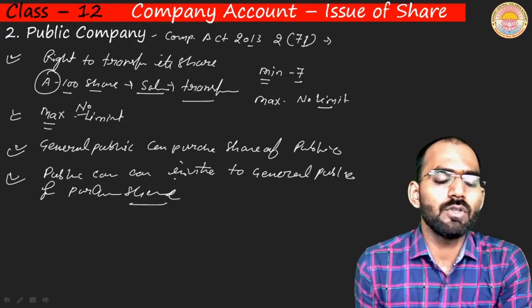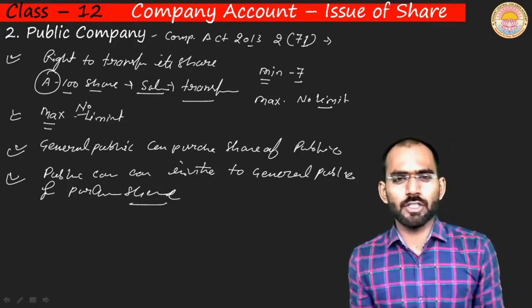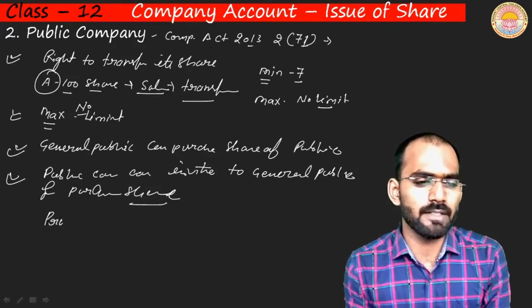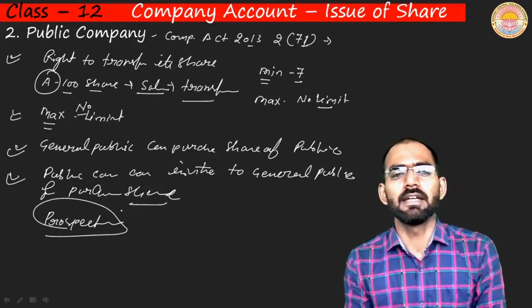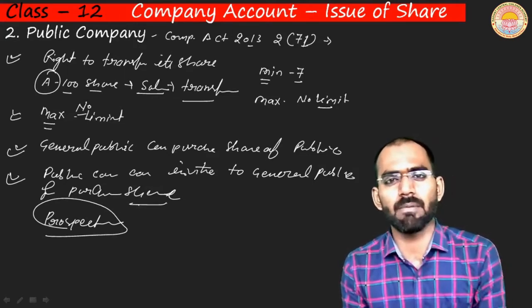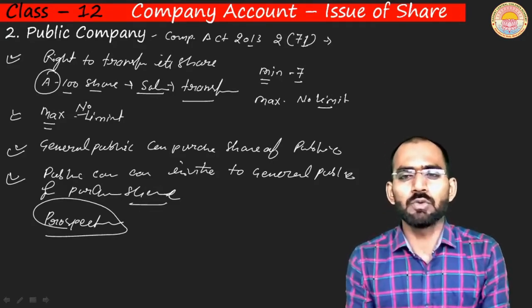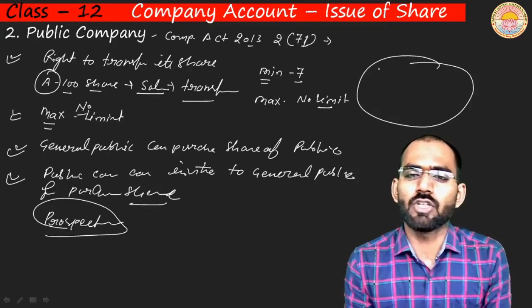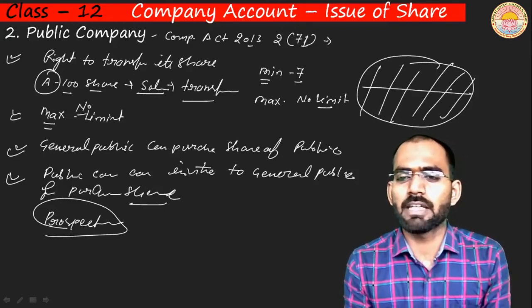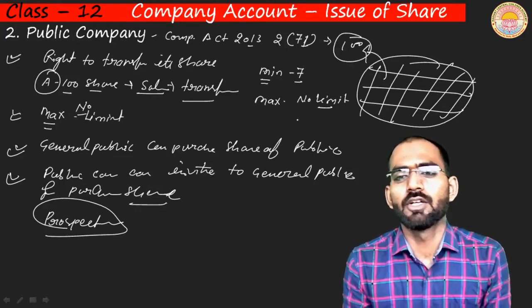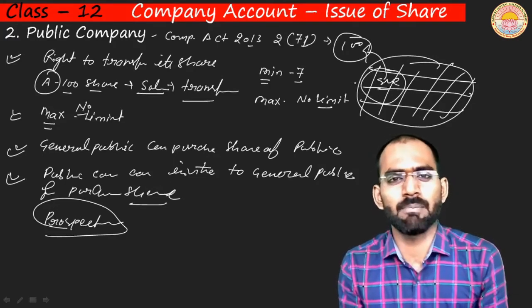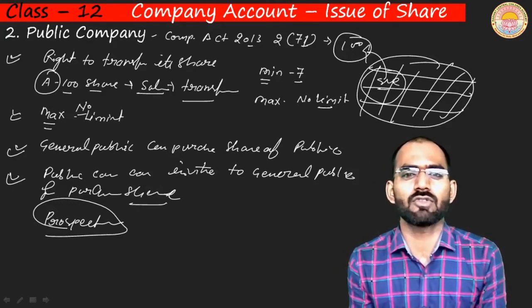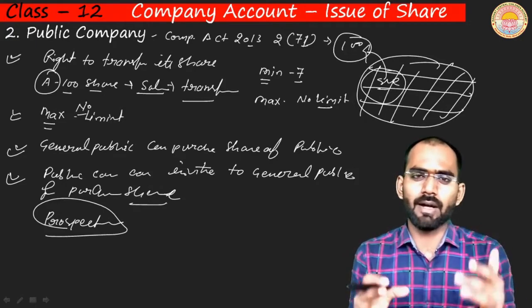A public company issues a prospectus to invite the general public to purchase its shares. This prospectus is like an invitation letter — 'nimantraṇ patra.' When a public company is newly formed, it invites the general public because the capital requirement of a public company is very large — far beyond what 200 members can contribute. Each share is priced at ₹100, and thousands of shares are issued to the public.